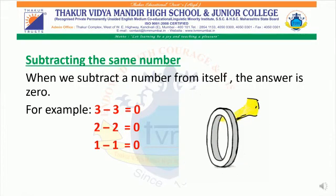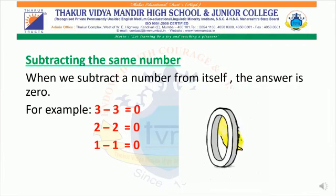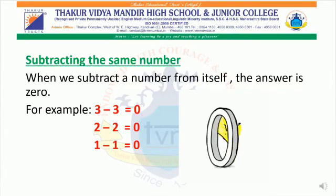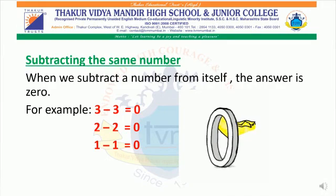Subtracting the same number: when we subtract a number from itself, the answer is 0. For example, 3 minus 3 is equal to 0. 2 minus 2 is equal to 0. 1 minus 1 is equal to 0.